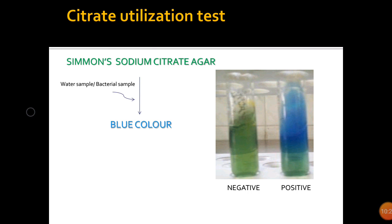The Citrate Utilization test determines the ability of bacteria to utilize sodium citrate as its only carbon source, with inorganic ammonium hydrogen phosphate as the sole fixed nitrogen source. The medium used is Simmons sodium citrate agar. When a water sample or bacterial sample is streaked on the surface of the solid agar medium, the bromothymol blue color indicator changes from green to blue, which is the indicator of a positive test for citrate utilization.